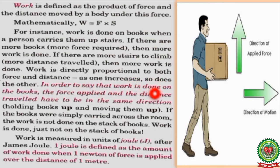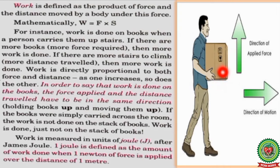In order to say that work is done on the books, the force applied and the distance traveled have to be in the same direction. If force is applied in another direction and the distance is covered in some other direction, then we cannot say that work is done on that object. For example, when holding books and moving them upward, this person applies an upward force on the box while raising it — since both force and motion are in the upward direction, work is done on the box.